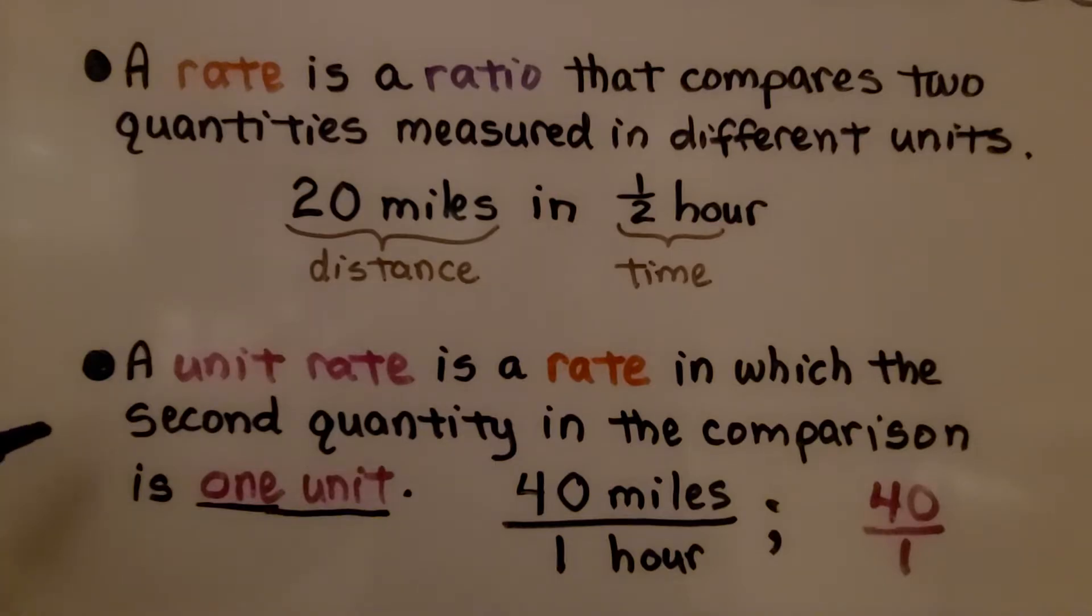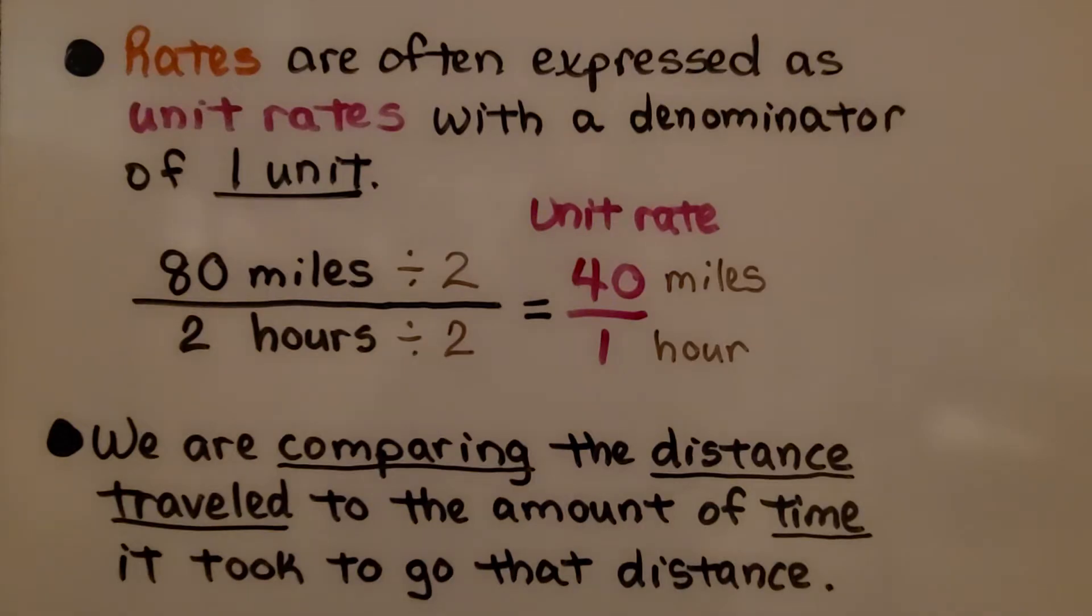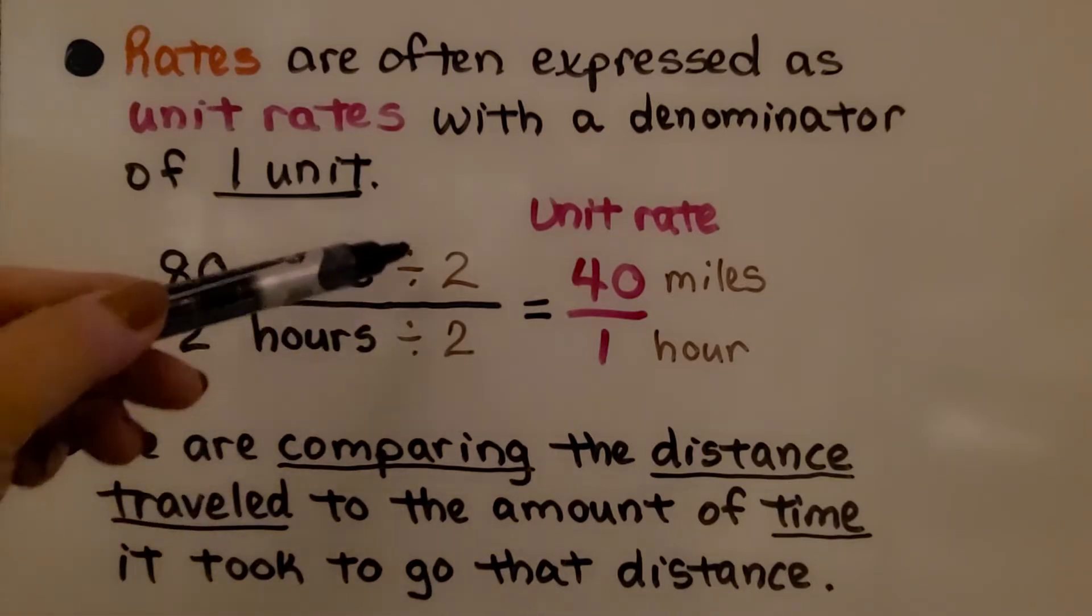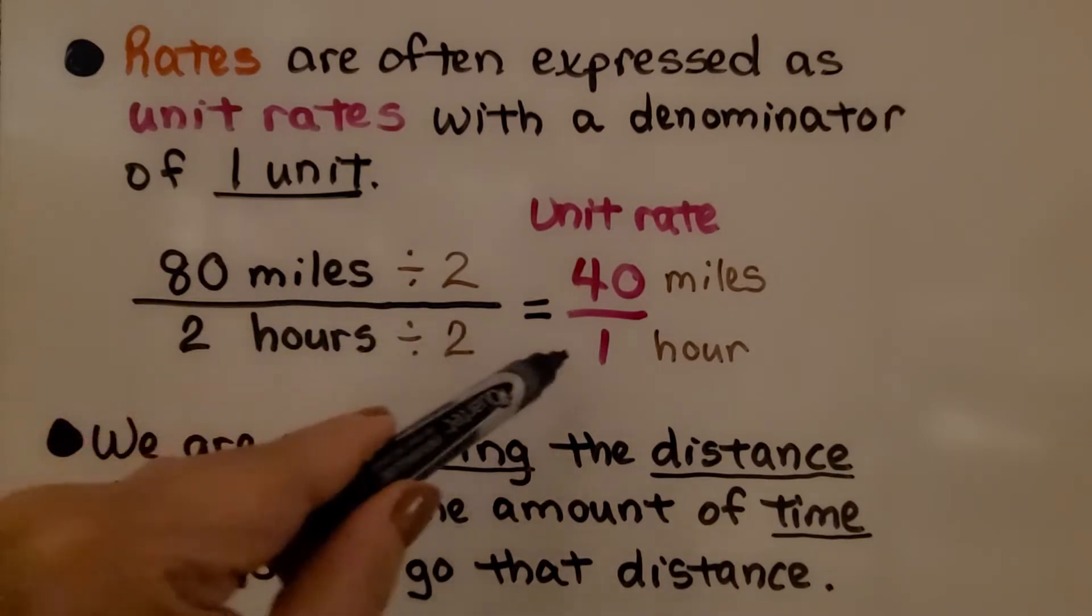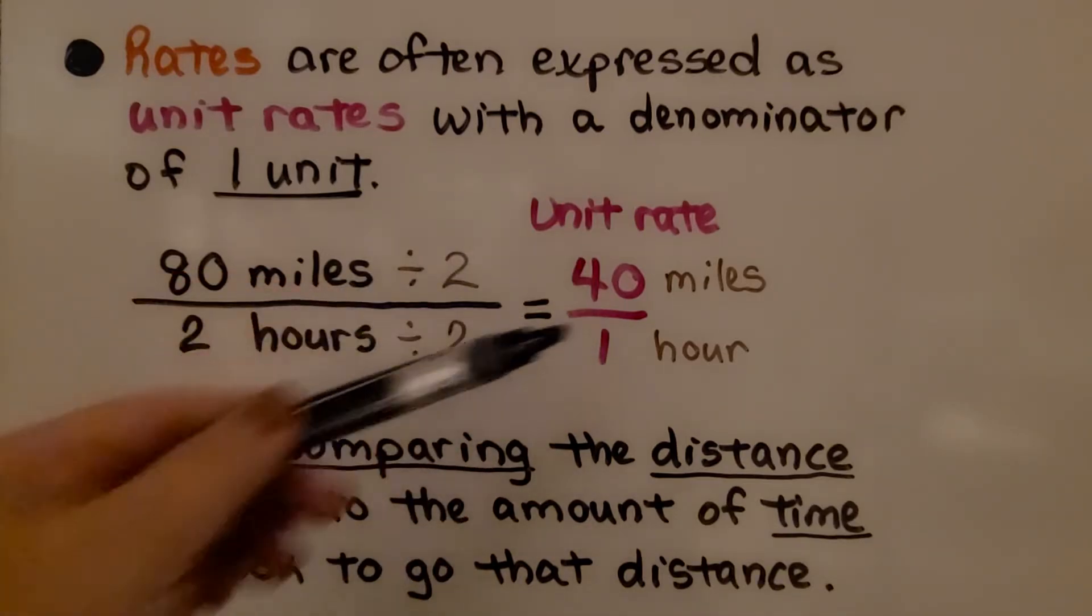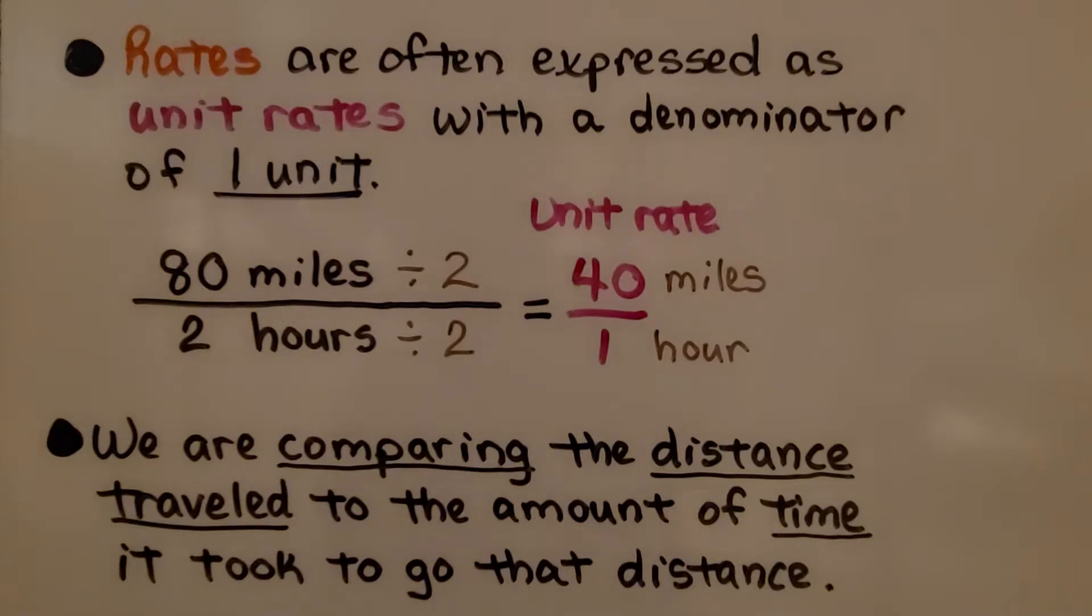A unit rate is a rate in which the second quantity in the comparison is one unit. We have 40 miles in one hour. Our unit rate is 40 over 1. Rates are often expressed as unit rates with a denominator of one unit. If we see 80 miles in two hours, we can divide by two for the numerator and denominator so that our denominator is one. We get 40 miles in one hour. We're comparing the distance traveled to the amount of time it took to go that distance with one unit.